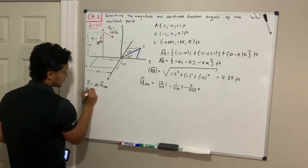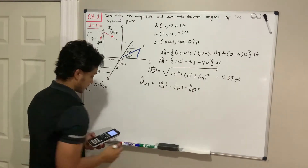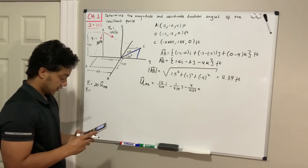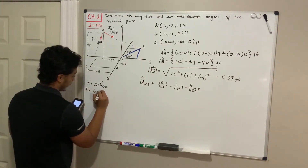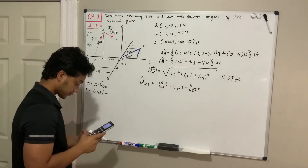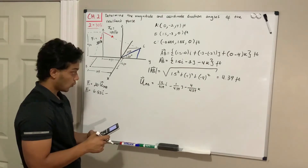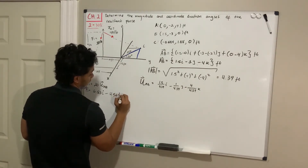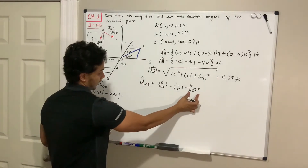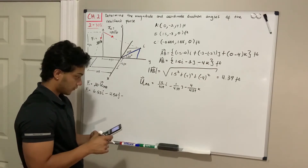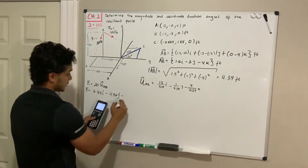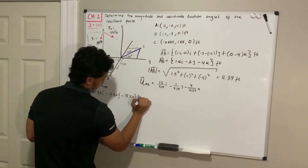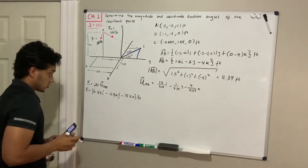F1 equals its magnitude, 20 pounds, multiplied by the unit vector AB. Multiplying 20 by each fraction: 20 × (1.5/4.39) = 6.83i, minus 20 × (1/4.39) = 4.56j, minus 20 × (4/4.39) = 18.2k. So F1 = 6.83i - 4.56j - 18.2k pounds. We're done decomposing F1.